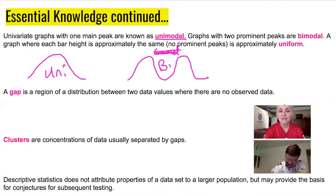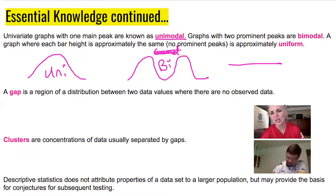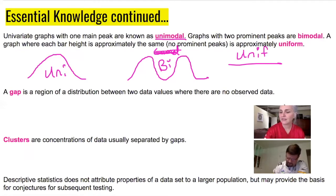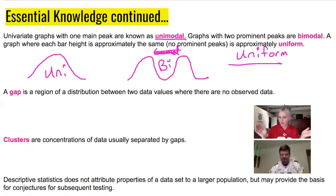If the graph doesn't have any peaks and everything is kind of the same height, we would call that approximately uniform. That might be like if the price of something is unchanging over a certain period of time. Those are the basic shapes.